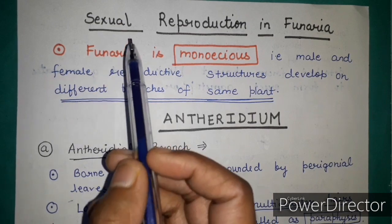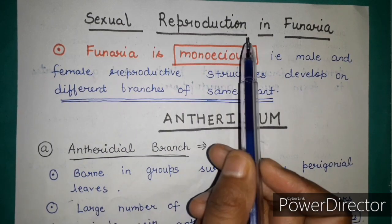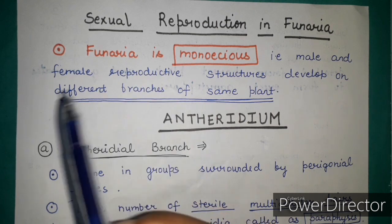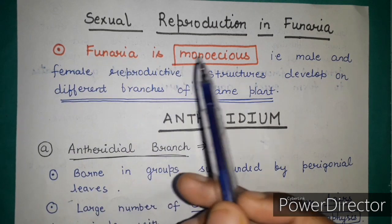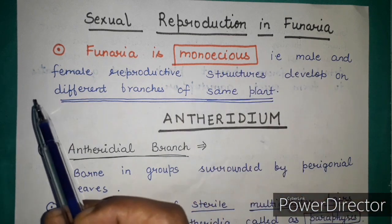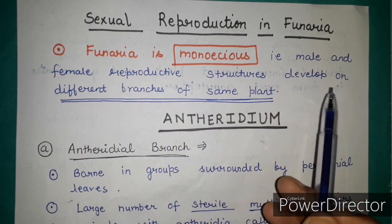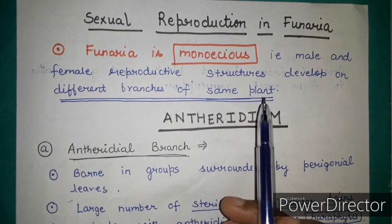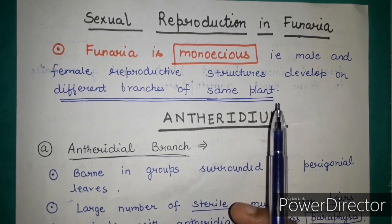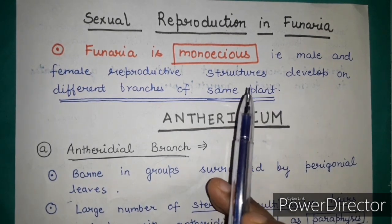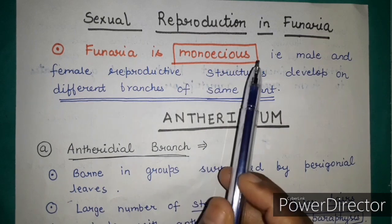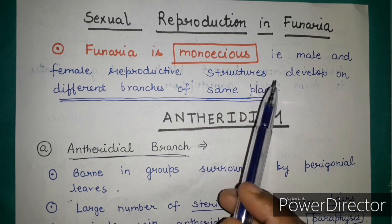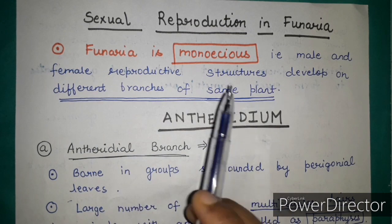Now we will discuss about sexual reproduction in Funeria, which is very important from an examination point of view. Funeria is monoicous, meaning the male and female reproductive structures develop on the different branches of the same plant.